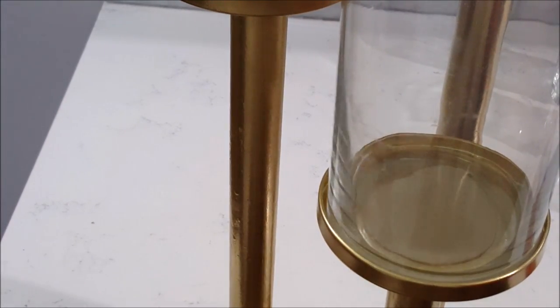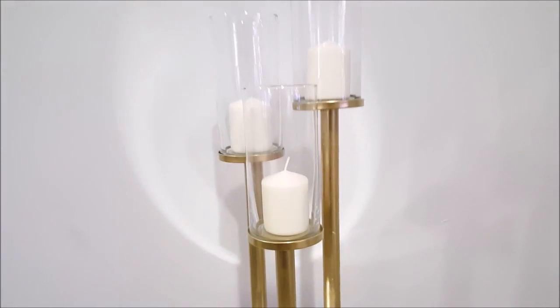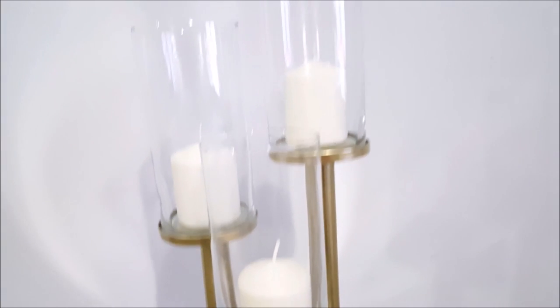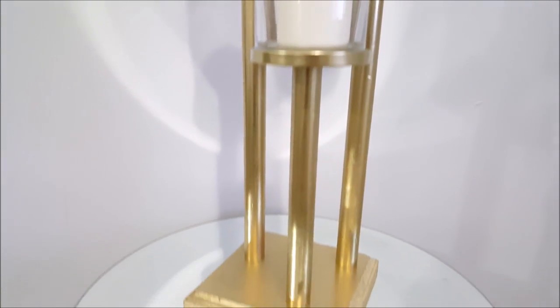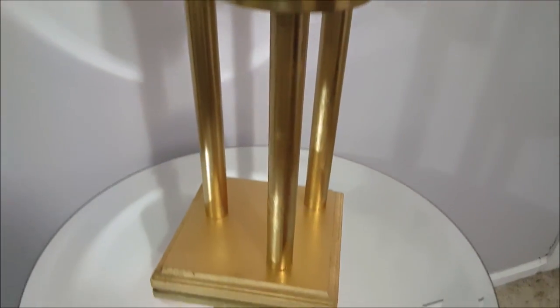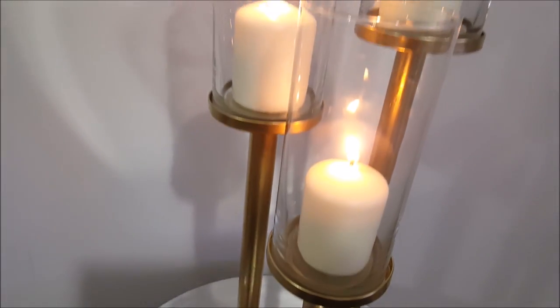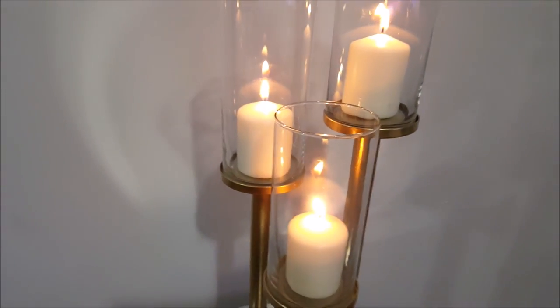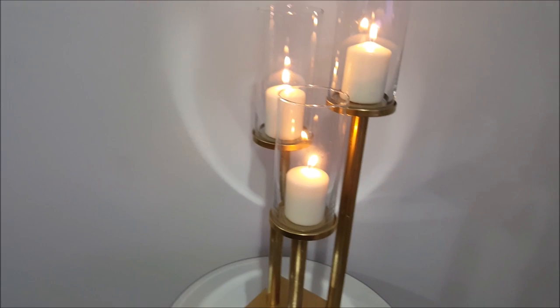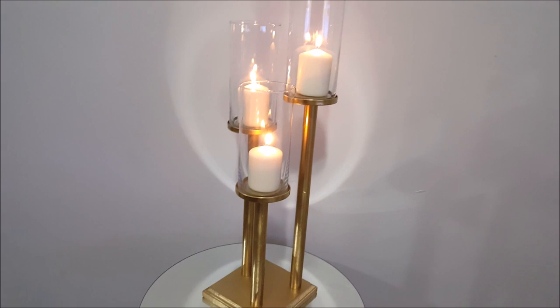I also sprayed it gold, and this is how it turned out. This is it without the candles lit. This DIY literally cost me under five dollars. I think I mentioned before that I got the base at Michael's for $1.49, the bases I got from Dollar Tree. I already had the covers, the paint, and the mop stick. Not bad for five bucks. Tell me what you think guys. Thank you so much for watching, bye now.